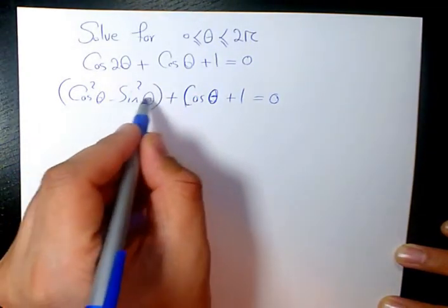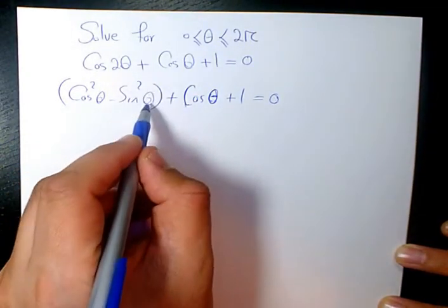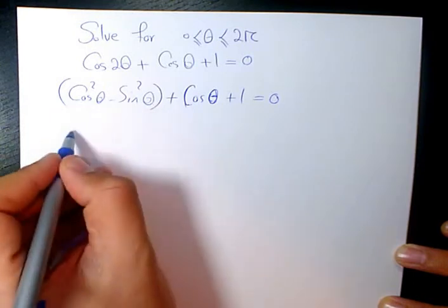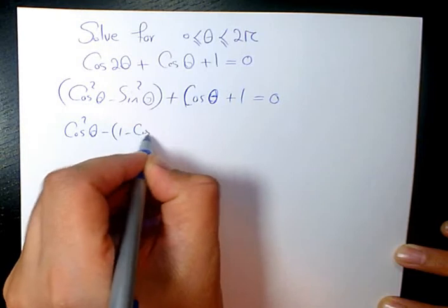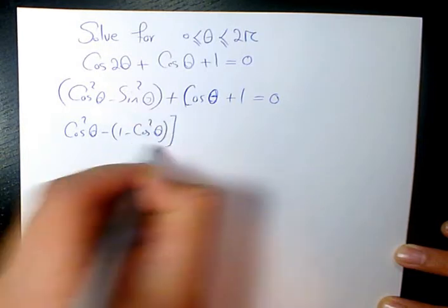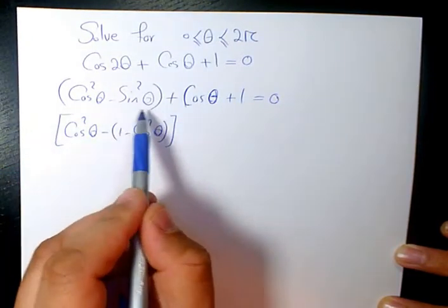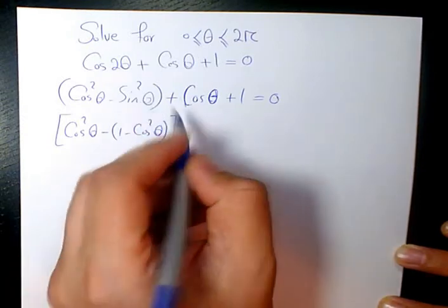And then from here we know sin²(θ) is 1 - cos²(θ). So it's going to be 1 minus cos²(θ), because we know sin²(θ) + cos²(θ) equals 1. So sin²(θ) is 1 - cos²(θ).